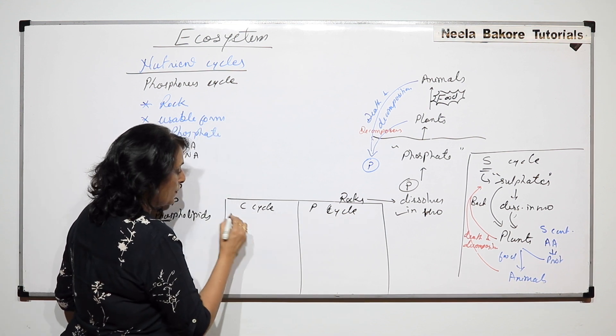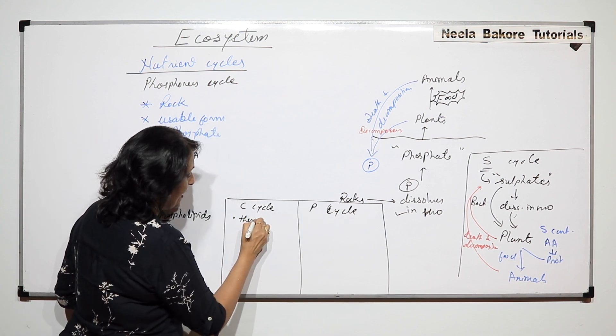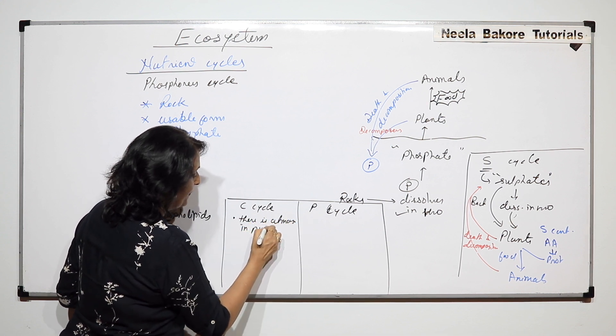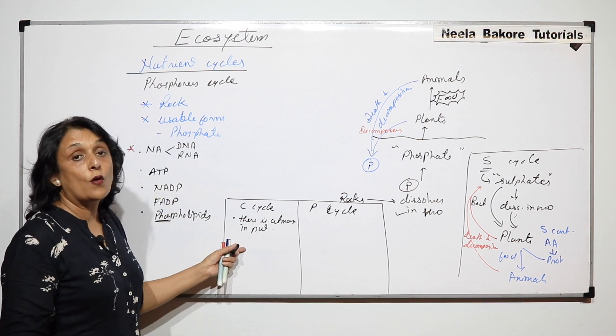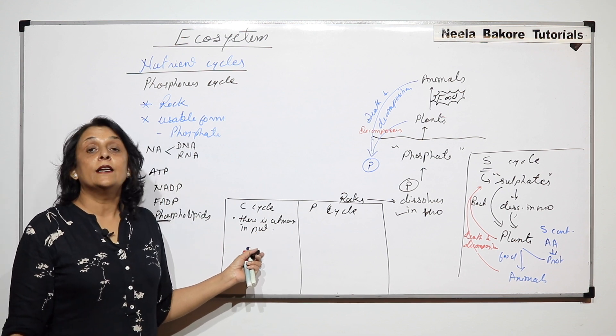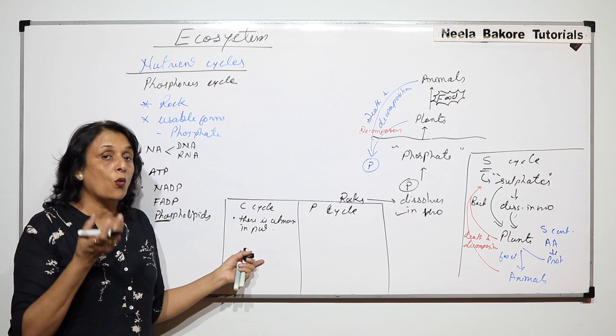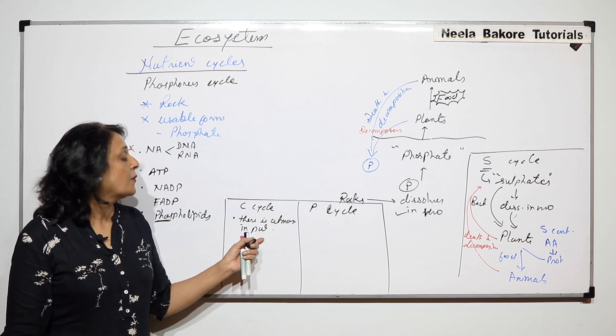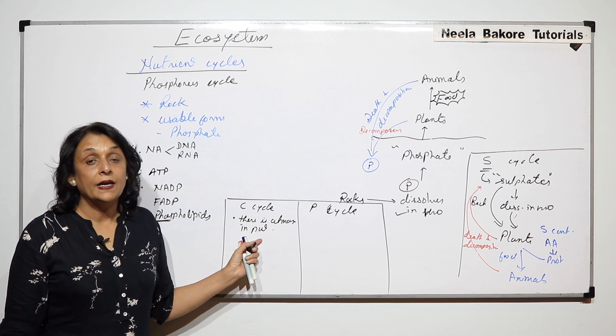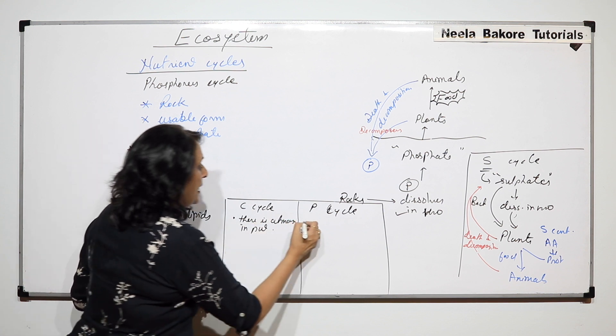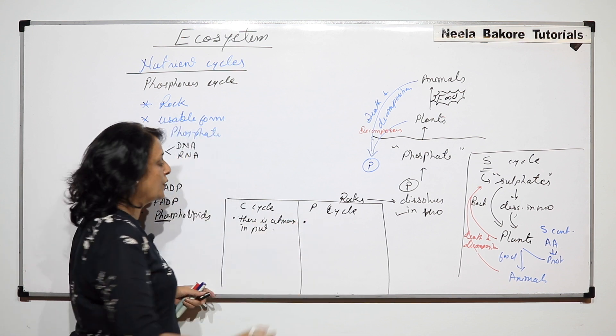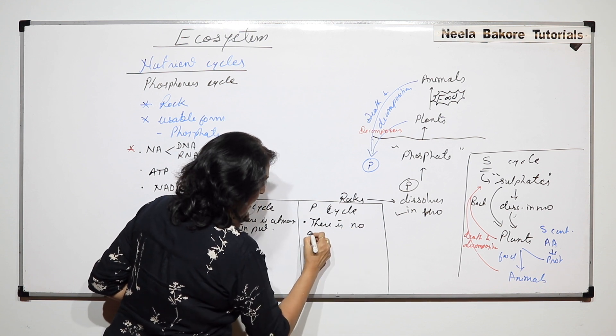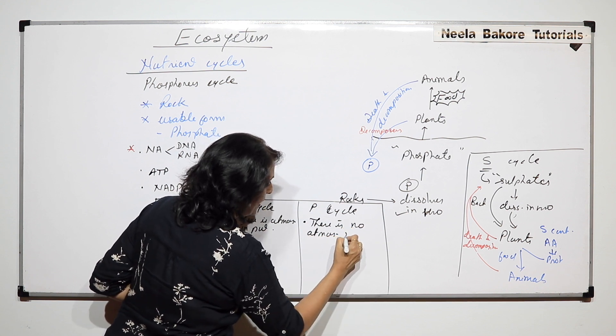In case of carbon cycle there is atmospheric input. When we talk of only carbon cycle, the majority input is from the ocean. Atmosphere plays a very negligible role - it has only one percent carbon or carbon dioxide, but there is atmospheric input. In case of phosphorus there is no atmospheric input.